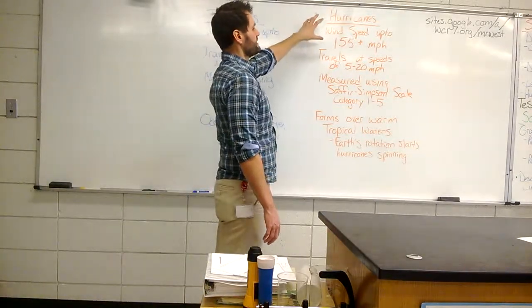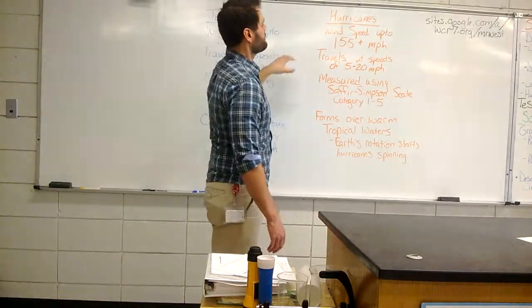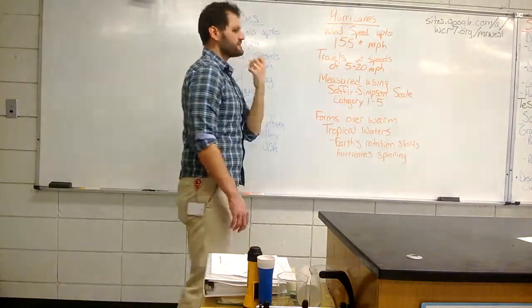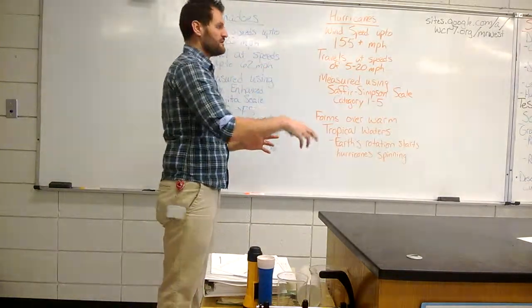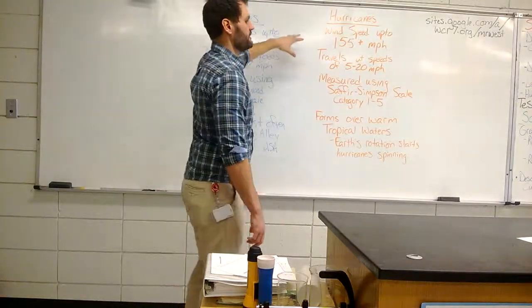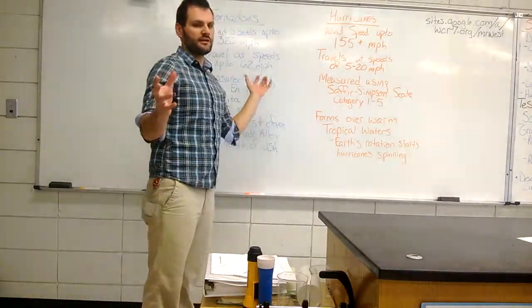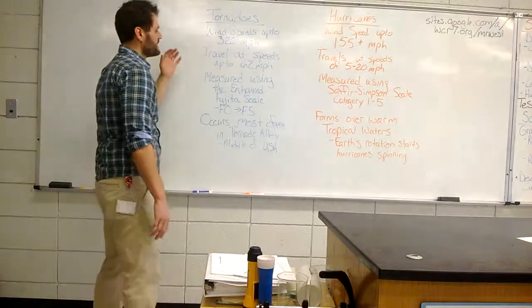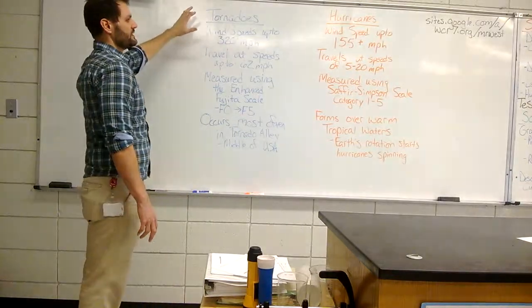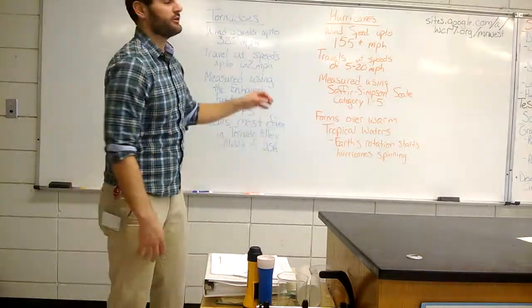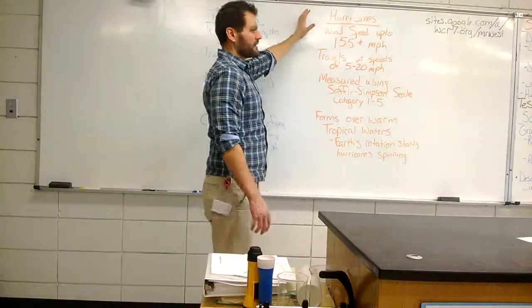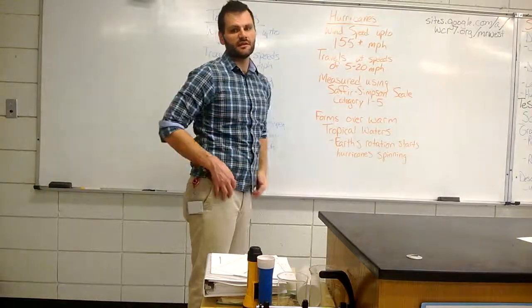Hurricanes are very different than tornadoes. They're similar in that they both have a vortex. Hurricanes are much, much bigger, much wider. They can be as big as a state, whereas tornadoes can be like a mile wide. And if it's like a mile wide, that's a gigantic tornado. Hurricanes can be like as big as the state of Texas.